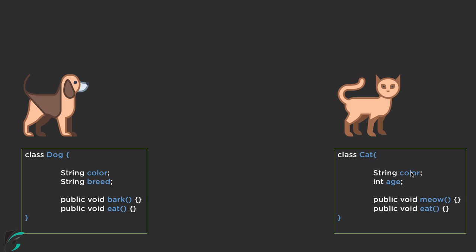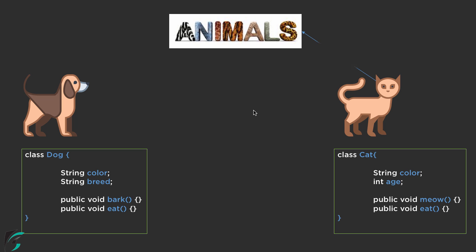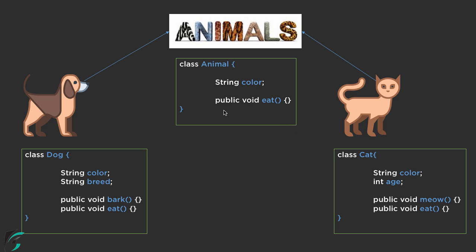Yes, of course it is repeated. So in that case, we can simply create the class of animal and represent it as class animal with string color and the eat method. Now since I have a class animal defined in my application, I should remove string color from the dog class and the eat method from there. The same thing applies to the cat class as well — we can simply remove string color and eat method. Now if I simply remove this variable and method, how can I get the properties of the animal inside the dog class and also inside the cat class? Here comes inheritance into the picture.